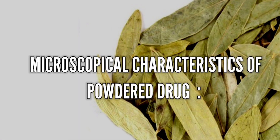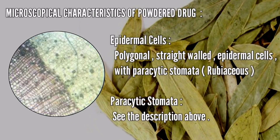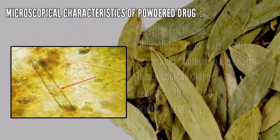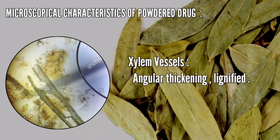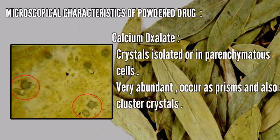Microscopical characteristics of powder drug: Epidermal cells — polygonal, straight-walled. Epidermal cells with paracytic stomata — paracytic stomata as described. Covering trichomes — unicellular, thick warty walls, acute apex, bulbous base, narrow lumen, conical shape. Xylem vessels — annular thickening, lignified. Calcium oxalate crystals — isolated in parenchyma cells, very abundant, occurring as prisms and also cluster crystals.